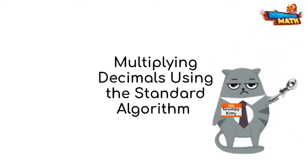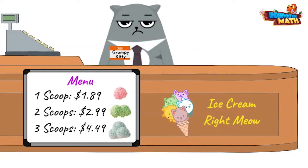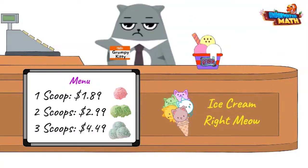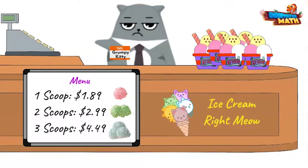I've got a job to do, better make this quick. Welcome to Ice Cream Right Meow. What'll it be? I will take three scoops of your favorite ice cream please. Great, that will be four dollars and 49 cents. Let me get four more of those for my friends. You've got to be kidding me. This register doesn't have a calculator. Well, it's a good thing we are here. Let's use the standard algorithm to find the cost.